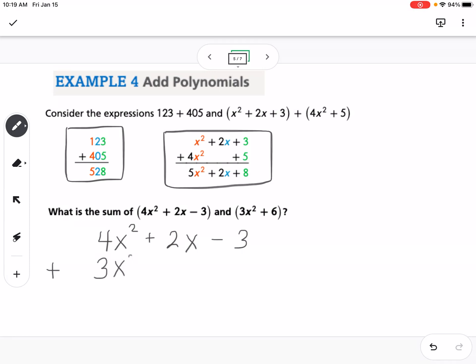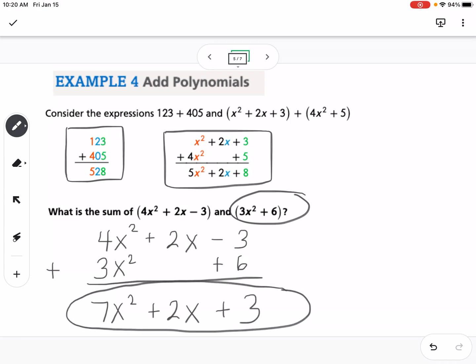now I'm going to put this one underneath, 3x squared plus 6. So notice that this second polynomial doesn't have an x term, so I just left a blank in there, so that way we know we're not adding anything to the 2x. So if I add 4x squared plus 3x squared, I get 7x squared plus 2x, and then negative 3 plus 6 would be plus 3. So that would be my polynomial.